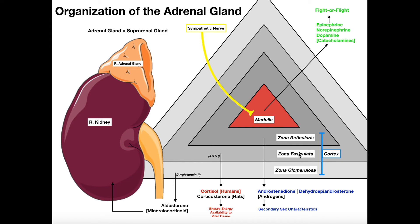Going deeper, we have the zona fasciculata, which releases cortisol. Most organisms release cortisol as their glucocorticoid, though rodents like mice and rats release corticosterone. Humans release cortisol. It's released in response to ACTH — adrenocorticotropic hormone — released from the anterior pituitary. ACTH travels in the blood to the zona fasciculata and triggers these cells to release cortisol. The function of cortisol is to ensure energy availability to vital tissues like the brain — it has a glucose-sparing effect.